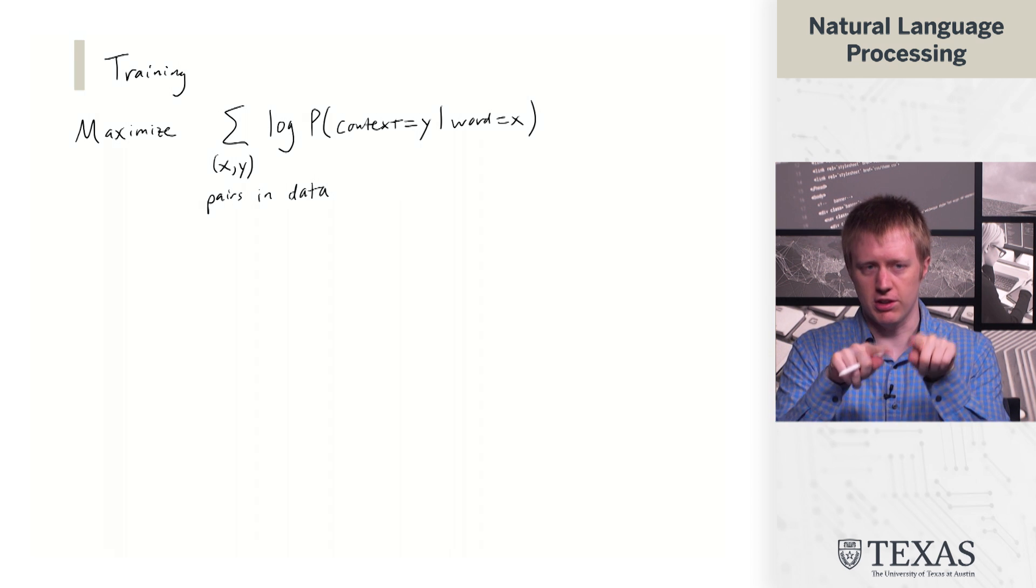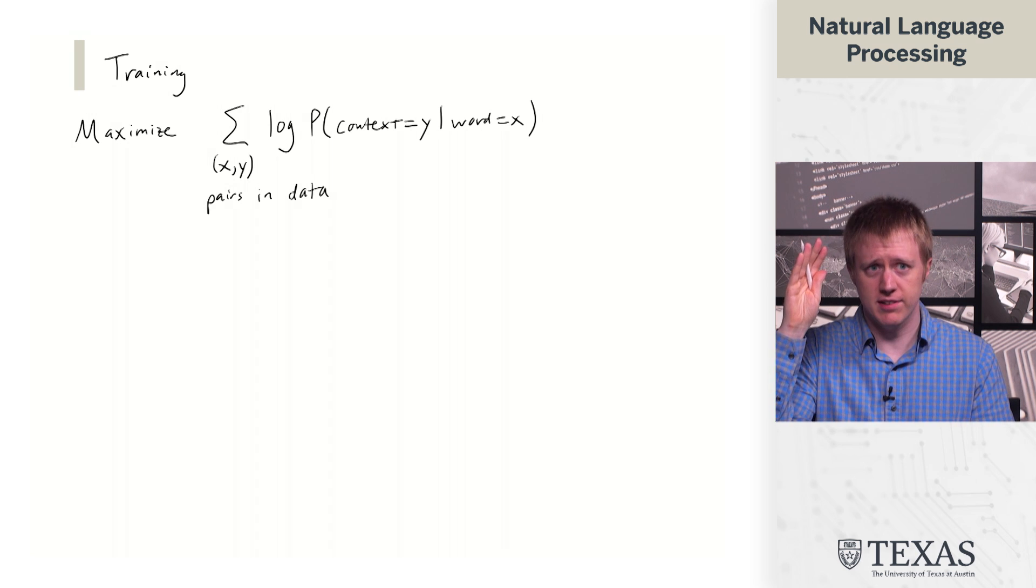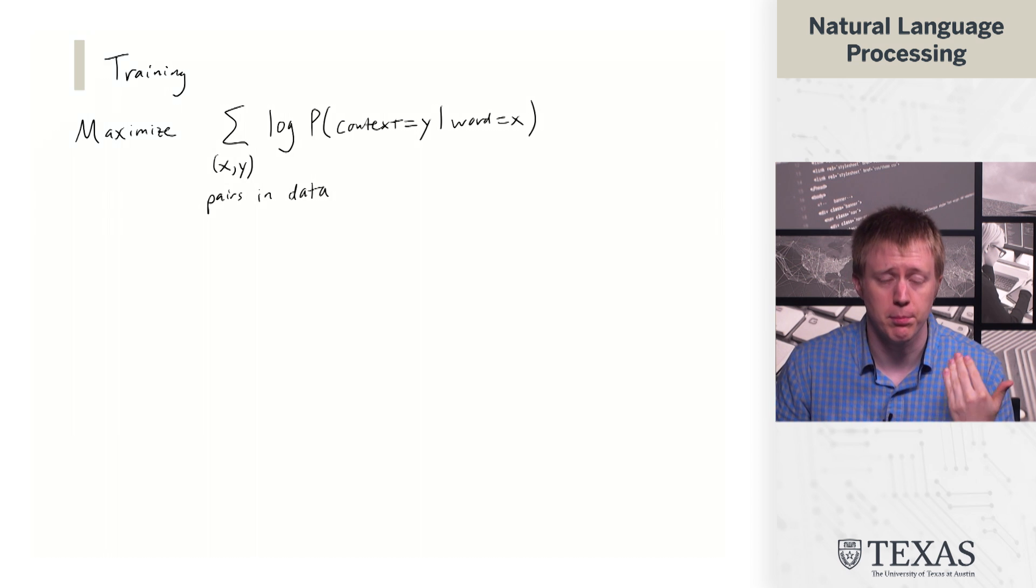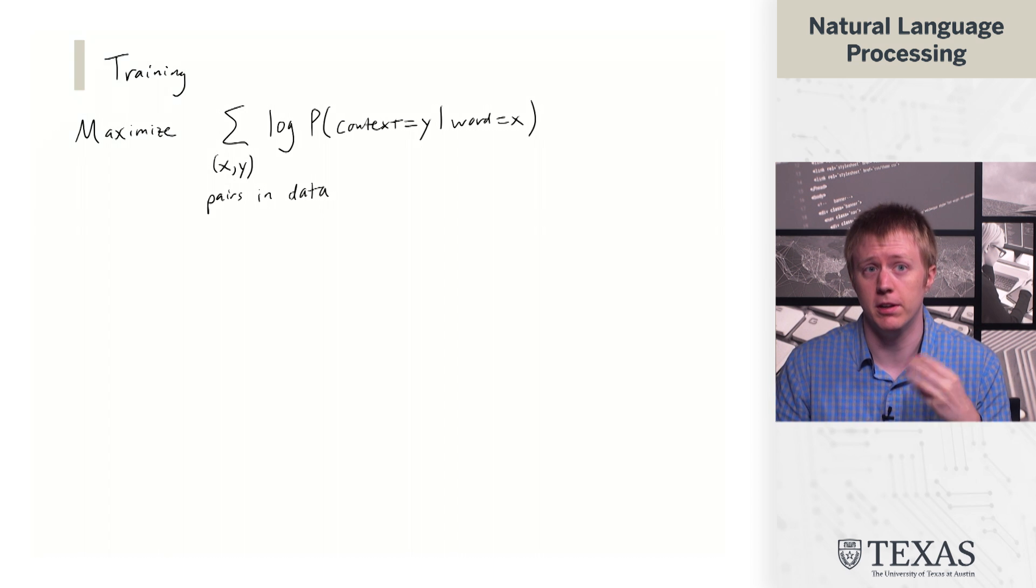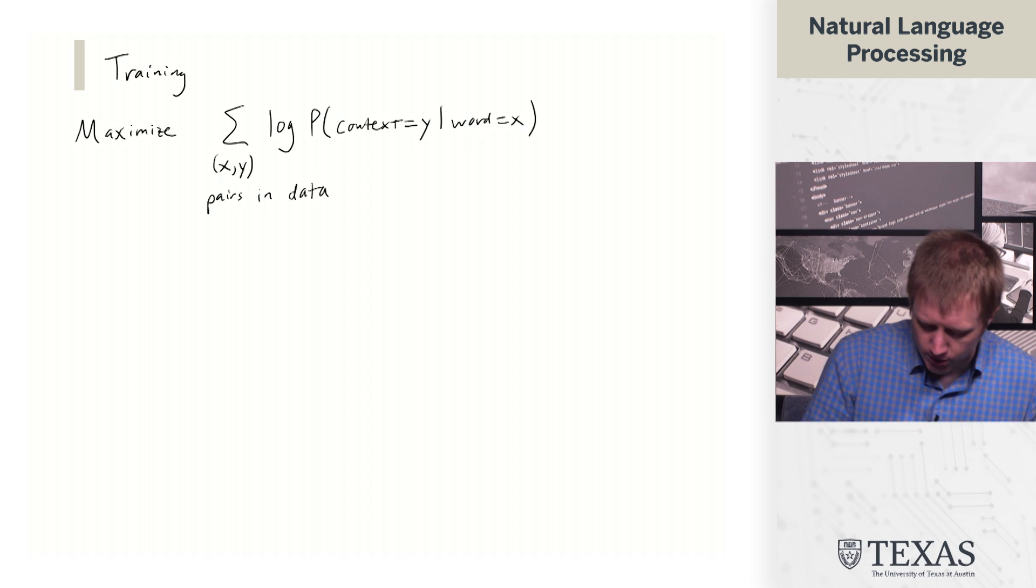So again, given the web, we just, with k equals 1, we're just kind of extracting these adjacent pairs of words. We form this big training set of these word context pairs. And now we want to maximize the probability of the sum of the log probabilities of the observed pairs.